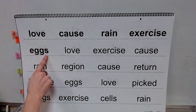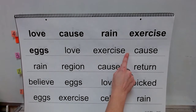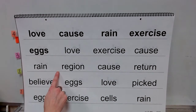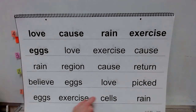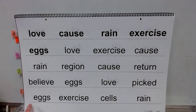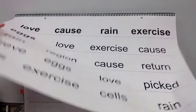This word is eggs. What word? Spell eggs. Word. Yes, eggs. Word: love. Word: exercise. Word: cause. Word: rain. Word: region. Word: cause. Word: return. Word: believe. Word: eggs. Word: love. Word: picked. Word: eggs. Word: exercise. Word: cells. Word: rain.